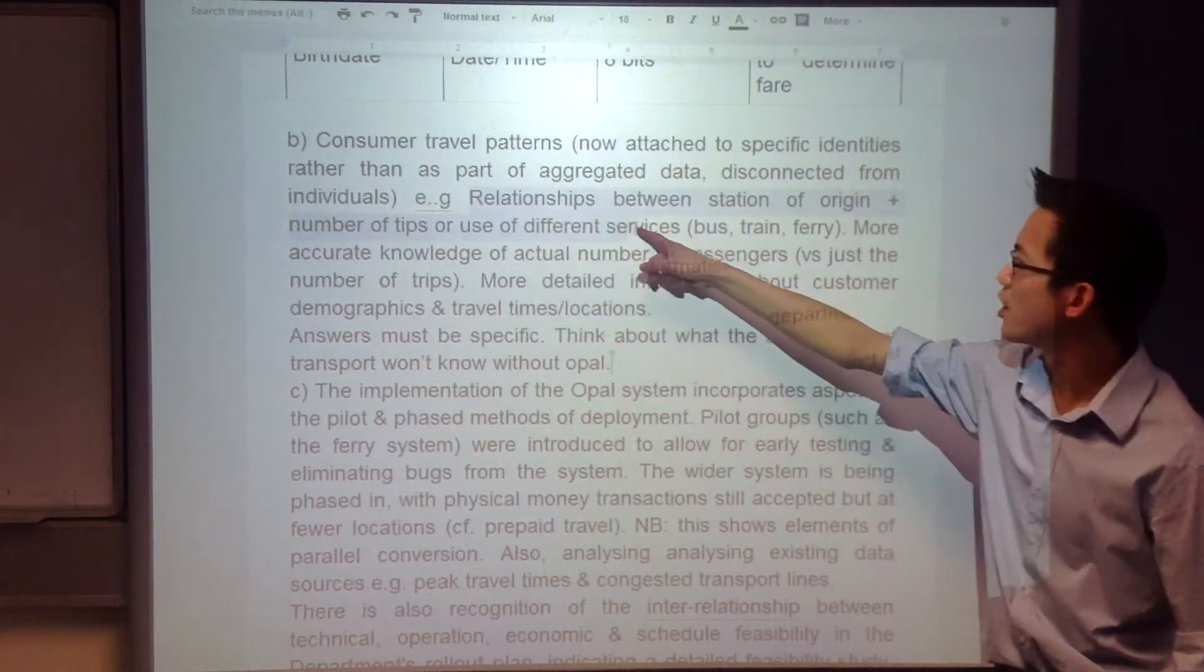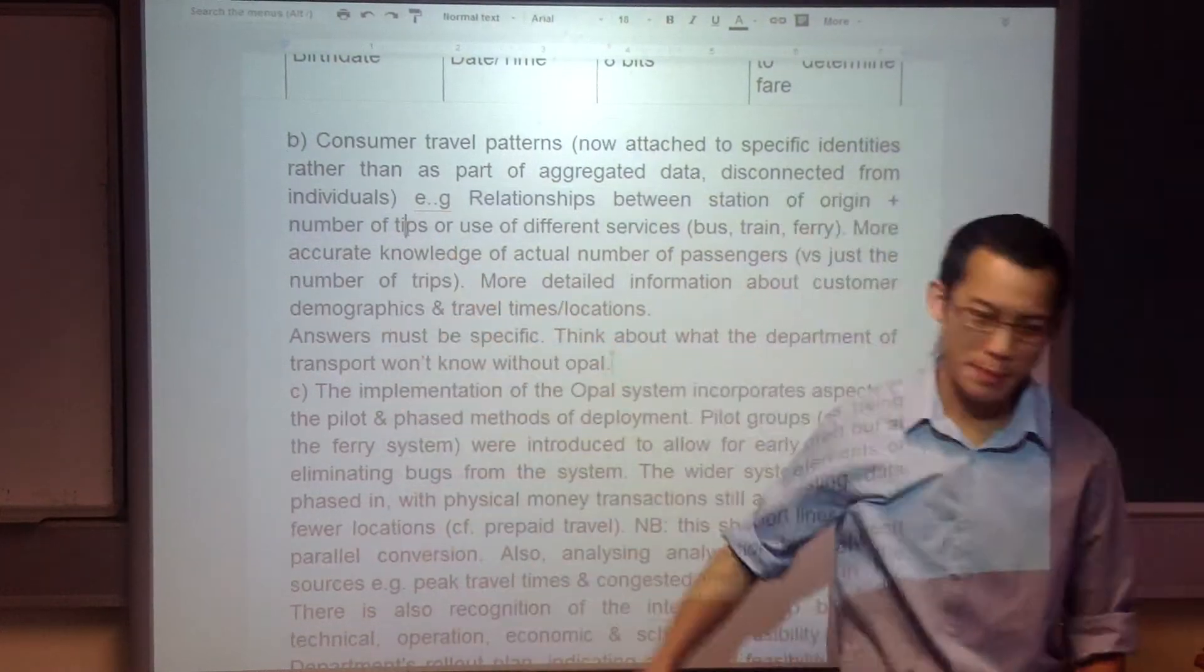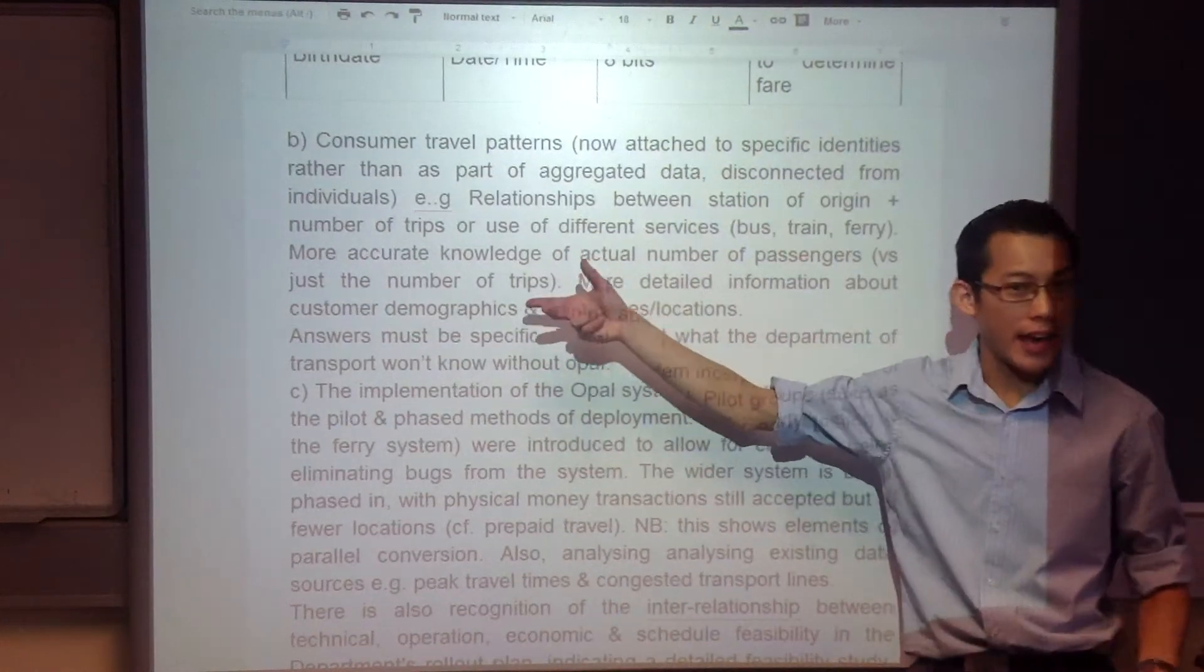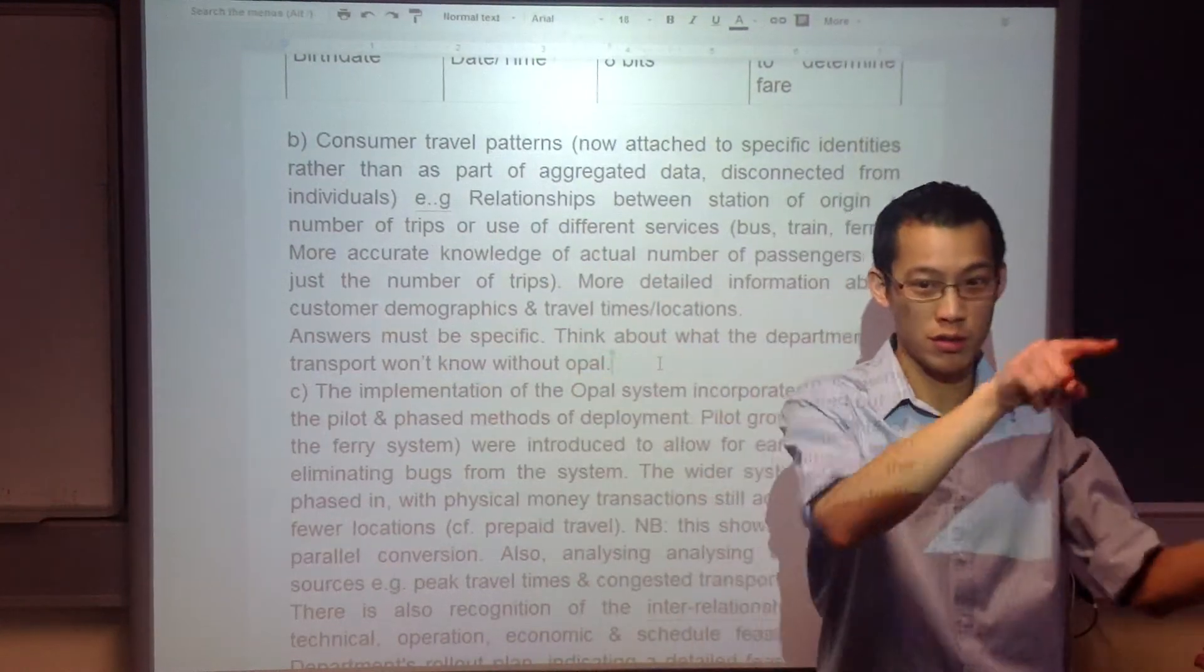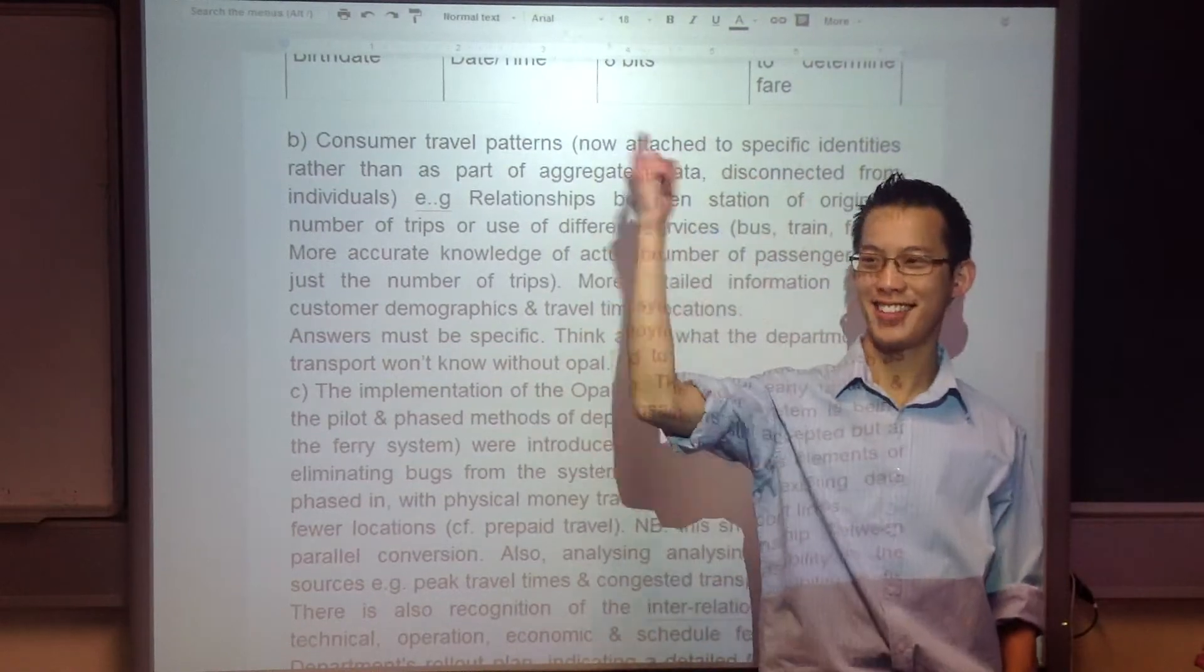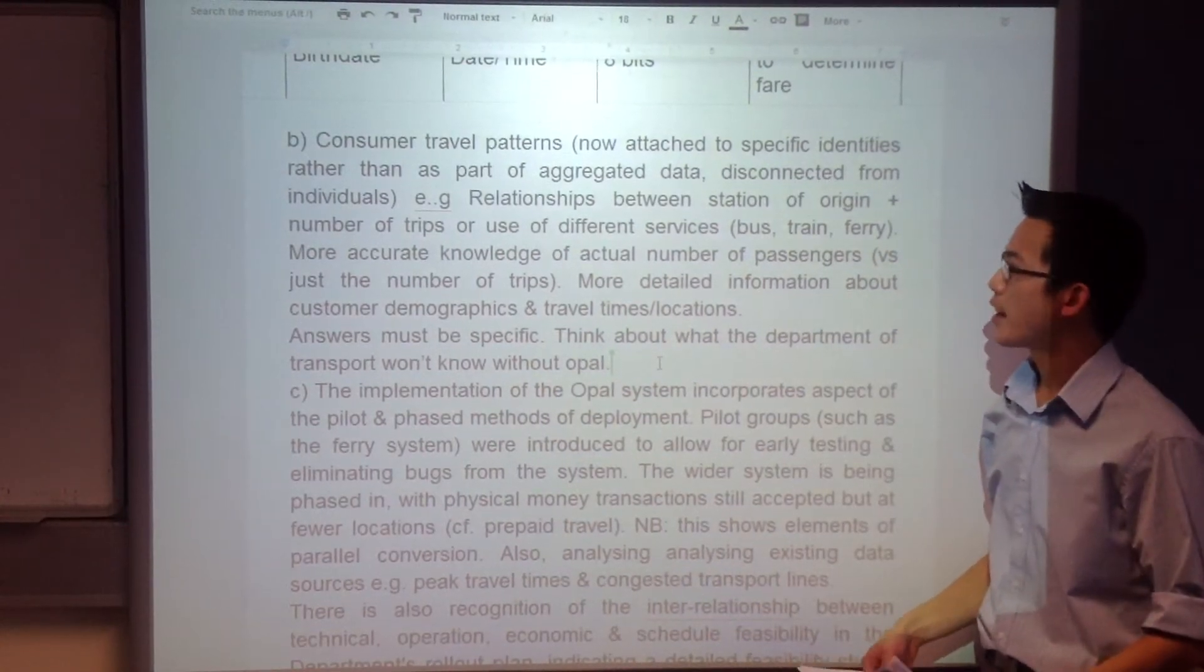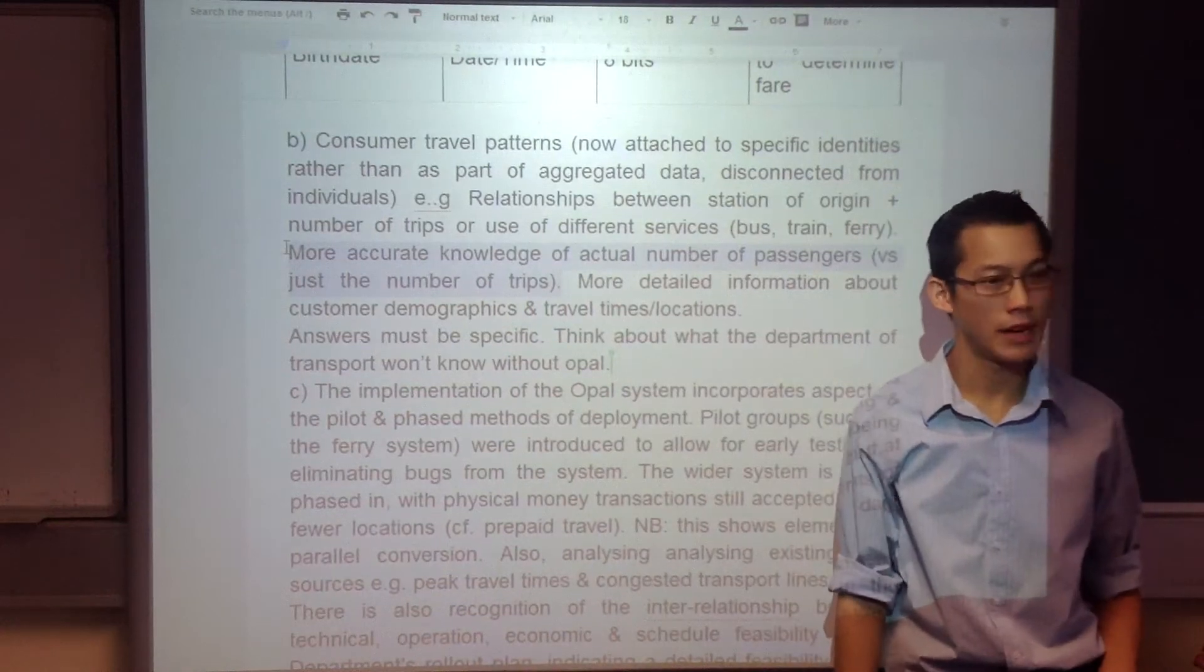Again this thing here, the relationship between the station of origin and the number of trips. It's okay, I wouldn't be able to type it this much this quickly either. Because again if you didn't have Opal there'd be, you'd know how many trips, but you don't know who's who, right? And you don't know for instance that one person is just going round and round the train network. Like why would you do that? Well, I don't know, but with Opal you can find out that.